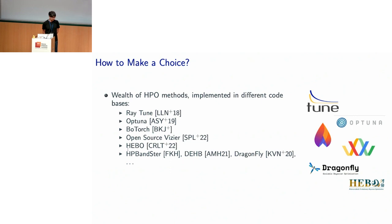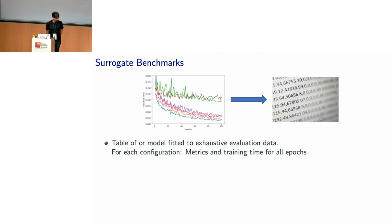So how do people make a choice between them? Informed choices require comparisons between these methods, and these comparisons are pretty hard to set up and very expensive to run. One very principled way to make such comparisons cheaper and faster to run is to use surrogate benchmarks.